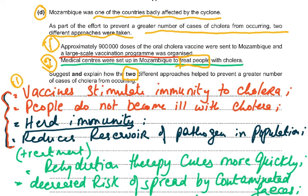For the vaccination approach: vaccines stimulate immunity to cholera so people do not become ill. This leads to herd immunity — when a large number of people are vaccinated, there are very few people who can transmit the disease from one to another. This reduces the reservoir of pathogens in the population; if out of 100 people only one is infected, only that person can pass it on.